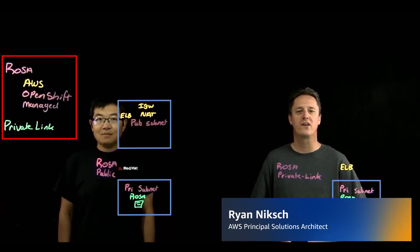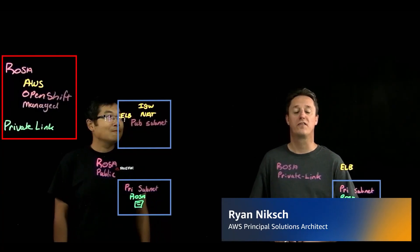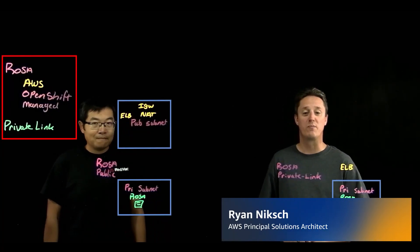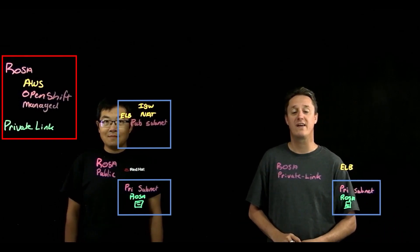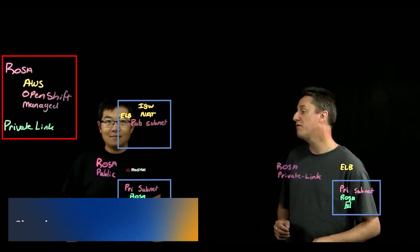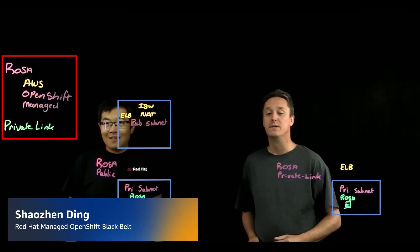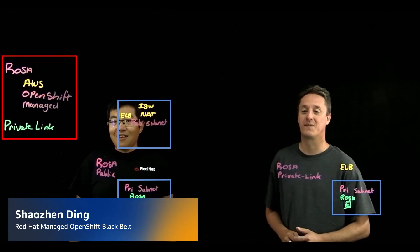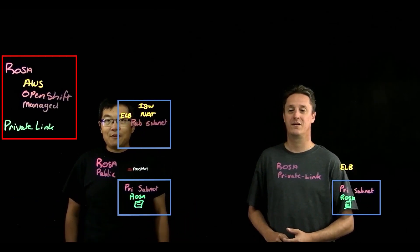Greetings, my name is Ryan Nix. I am a Principal Solutions Architect with Amazon Web Services. Joining me here today is Xiaojian from Red Hat. Hi, I'm a Red Hat Managed Service Black Belt.